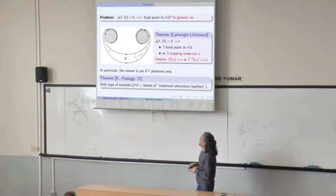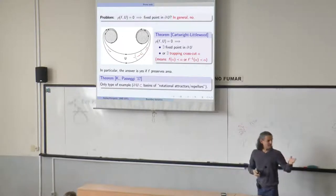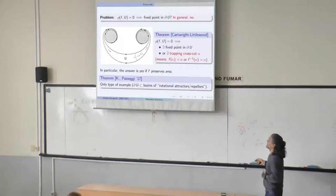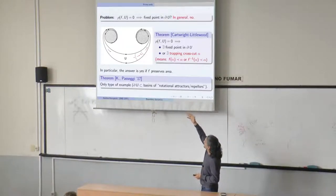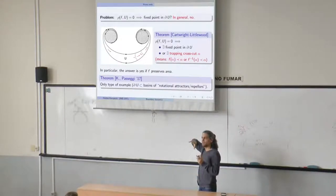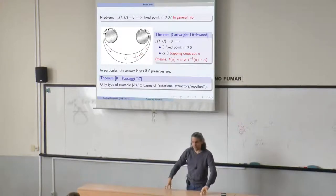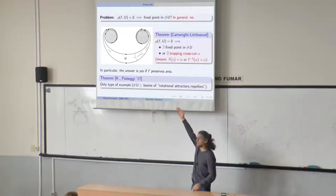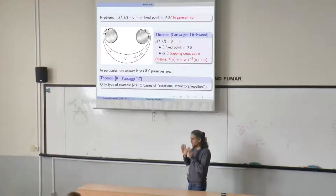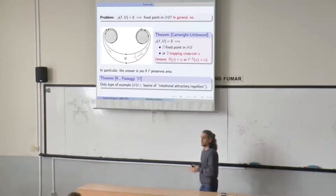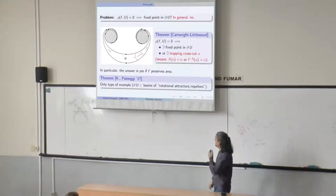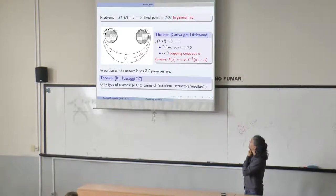What we showed with Patrice is that this is precisely the only bad situation. If you have zero rotation number and no fixed point in the boundary, then you must have some kind of sets which are attractors and repellers, rotating in a way, and the boundary of U is contained in the basins of these things. It's really an exception, both dynamically and topologically very restrictive.